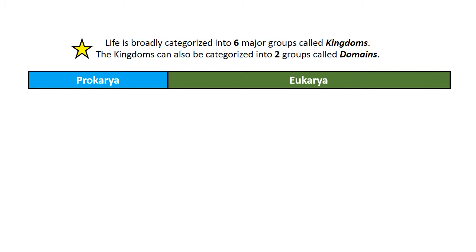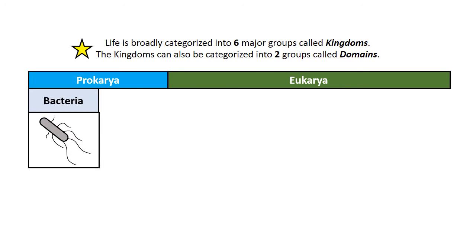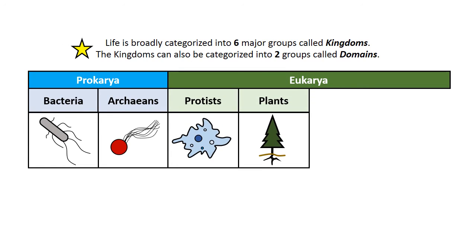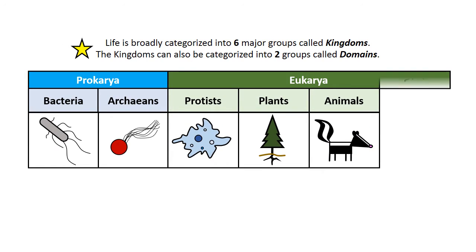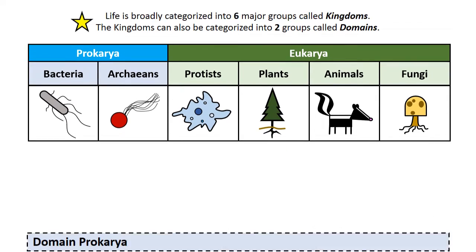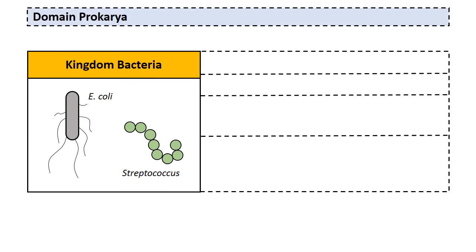There are two domains: Prokary and Eukary, based on cell type. Prokary contains prokaryotes and Eukary contains eukaryotes. There are two kingdoms within the Prokary domain: Bacteria (or Eubacteria) and the Archaeans. Within Eukary there are four kingdoms: the Protists, the Plants, the Animals, and the Fungi.